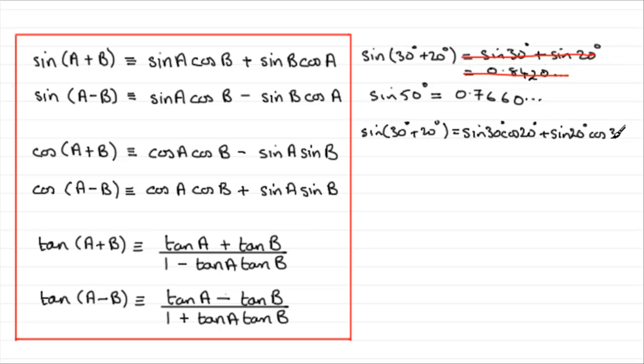So times cosine of 30 degrees. And if you get on the calculator for this, just do the sine of 30 times cos 20 plus sine 20 times cos 30 and you'll find you will get 0.7660 and so on. So, that would verify that this identity here works.